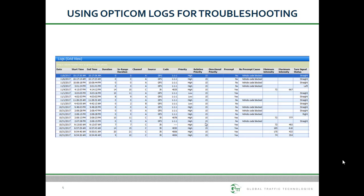When looking at the no preempt cause column, it is important to understand what that column is saying. Even though the column is called no preempt cause, it may also list the reason a particular log entry was terminated and a new one started. Also, the no preempt cause listed may have been true for only part of the call that was logged, but not the whole time. This is why it is important to look at all adjacent log entries.